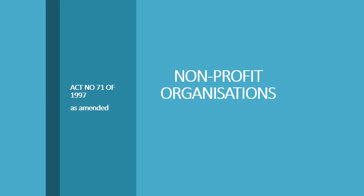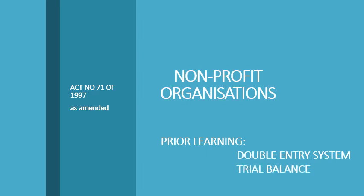We are entering Part 2 of the learning module on introductory financial accounting. Part 2 deals with the preparation of financial statements for various forms of ownership, starting with non-profit organizations as enacted by Act Number 71 of 1997. This learning area assumes you are able to apply the double entry system to prepare different accounts in the general ledger and to properly draw up the trial balance.